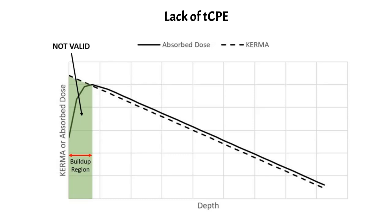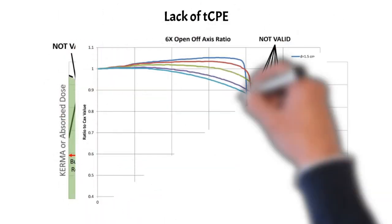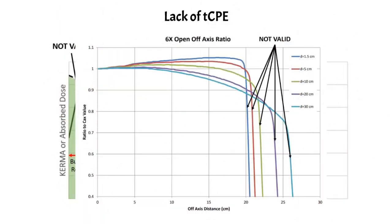The hand calc formalism is also not valid in the penumbra of fields. As shown in the profile diagram, the extreme dose falloff penumbra regions are invalid for the same reason as the buildup region — this is another region of charged particle disequilibrium, which is very hard to quantify with the detectors used to acquire beam data. Therefore it is very hard to predict what the penumbra will look like, and the hand calculation formalism is not valid there.